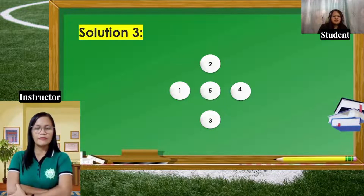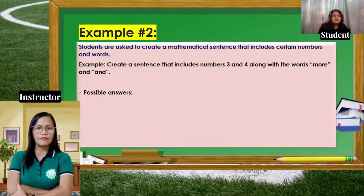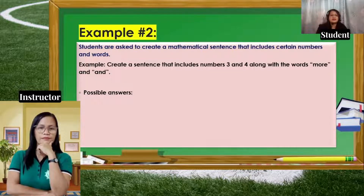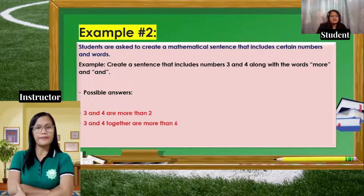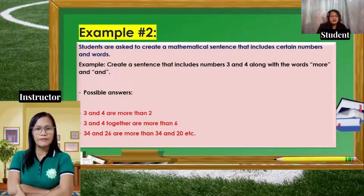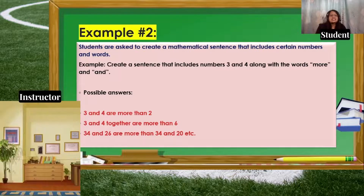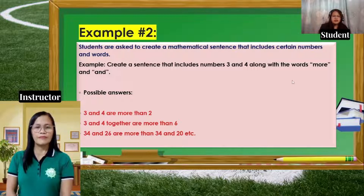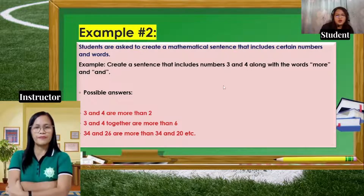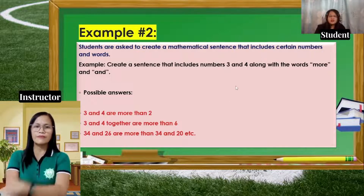Let's have another example of an open-ended problem. Students are asked to create a mathematical sentence that includes certain numbers and words. For example, create a sentence that includes the numbers 3 and 4 along with the words 'more' and 'and.' Possible answers include: '3 and 4 are more than 2,' '3 and 4 together are more than 6,' '34 and 26 are more than 34 and 20,' and so on. This problem has many possible answers.